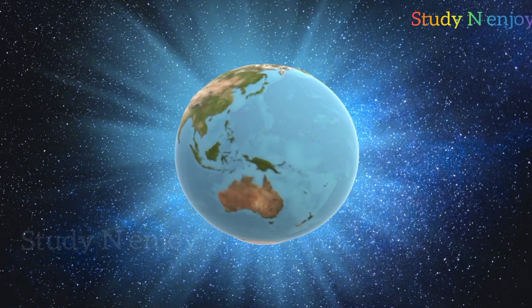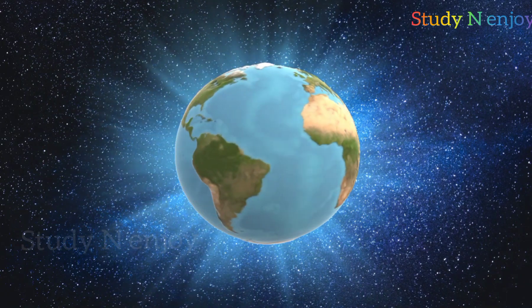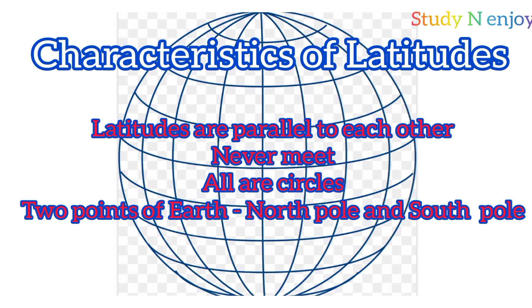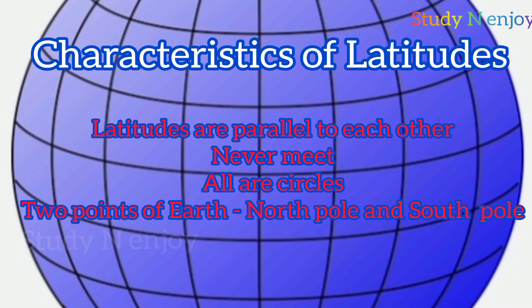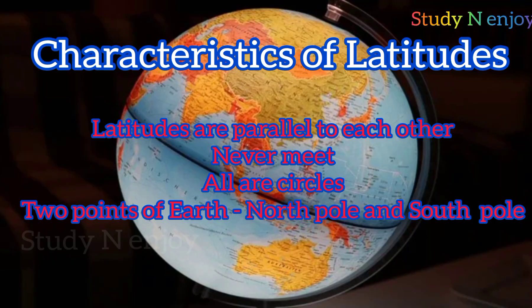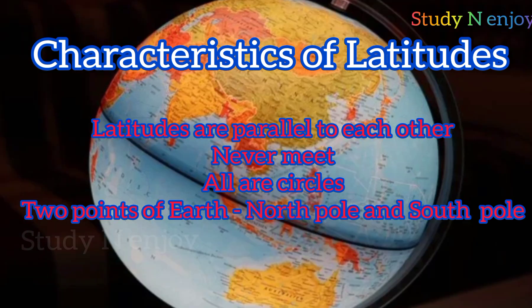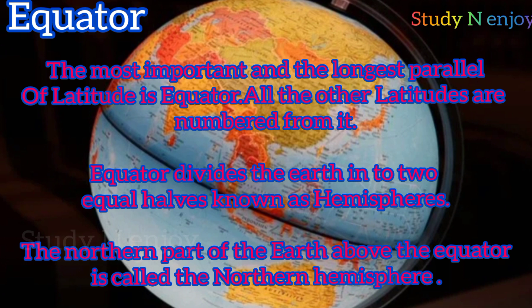What are the characteristics of latitudes? The lines of latitude are parallel to each other and they never meet — this is an important peculiarity of latitudes. All latitudes are circles drawn in each hemisphere and they become smaller and smaller as they move towards the poles. All latitudes other than the equator are called small circles and cannot divide the earth into two equal halves. Only the equator divides the earth into two equal halves. The North Pole at 90 degrees North and the South Pole at 90 degrees South are just two points on the tilted axis of the earth.